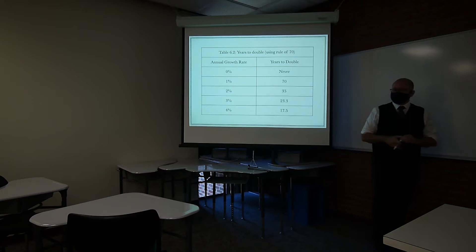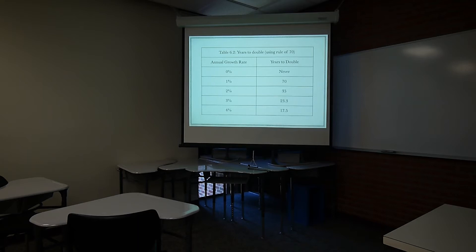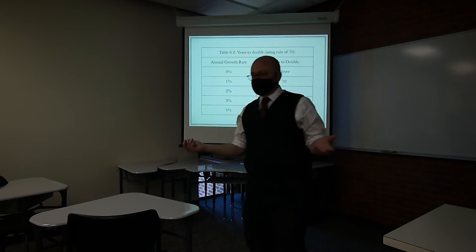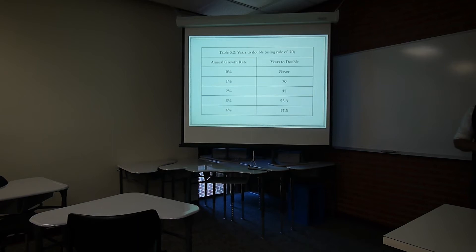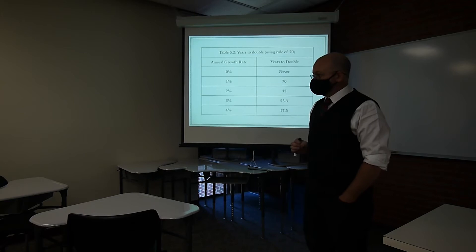One thing that's really a little puzzling for people is the idea of compounding growth. Small changes in rates of growth make big differences over time. Any of you familiar with the rule of 70? It's technically the rule of 72, but 70 is easier to remember. The rule of 70 tells us how many years it's going to take something to double: take 70 divided by the growth rate in percentage terms, and it tells you how many years it would take to double.